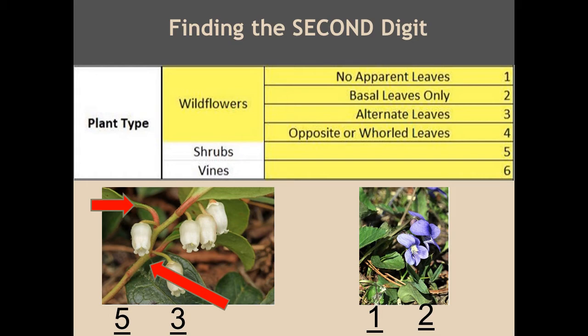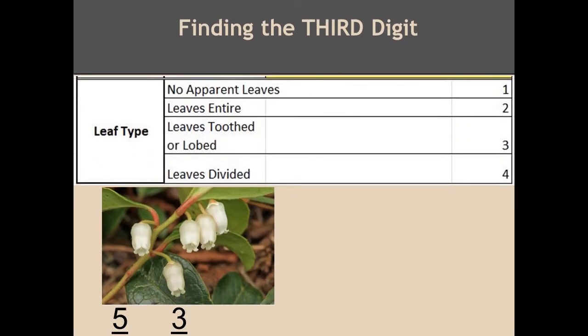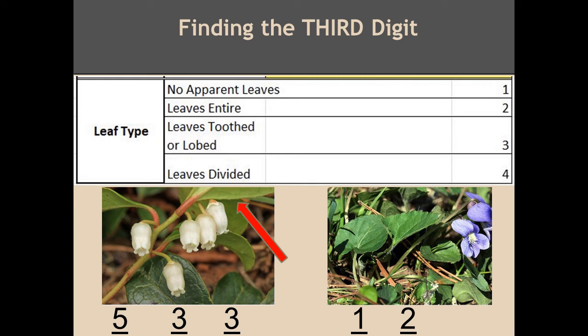Let's go to the third digit. The last digit is leaf type — look at the edge of the leaf. What is the margin like? Observe closely. They may seem entire, but do you see the really small teeth? Did you come up with three — leaves toothed or lobed? What about the second wildflower? What is its margin? If you guessed that the leaves were toothed, you are correct.